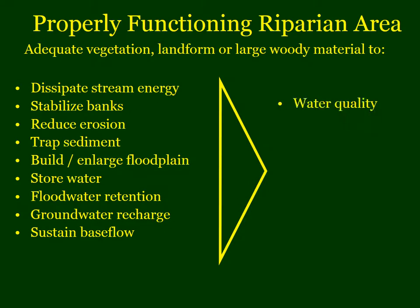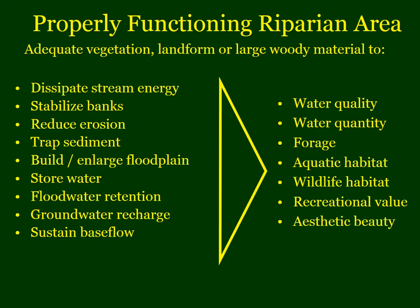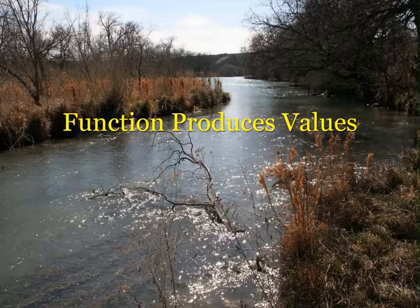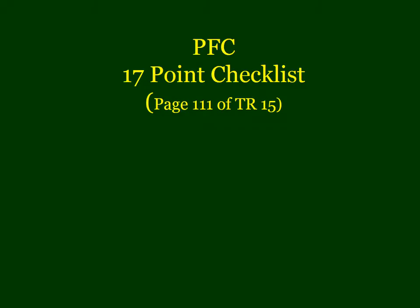These physical attributes define a properly functioning riparian area and provide the basis for the values that society wants from creeks and rivers — the forage, water quality, wildlife, and other things people desire. So one of the main take-home messages of this course is that the physical processes of function are what provide for the values that we want from creeks and rivers.